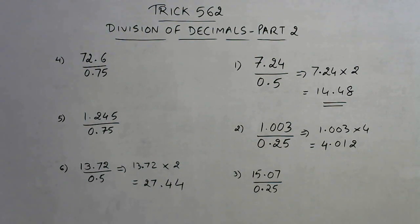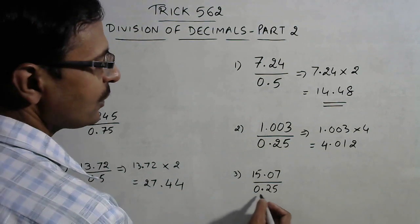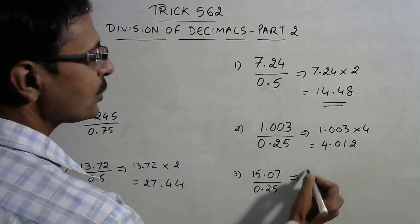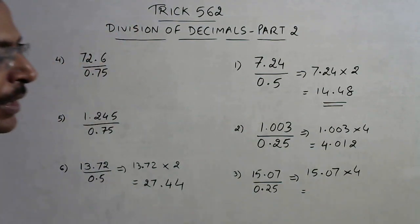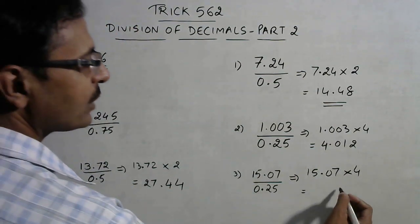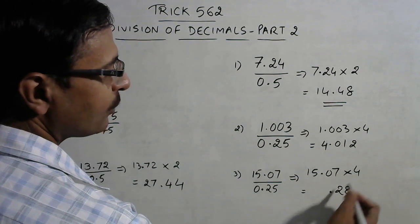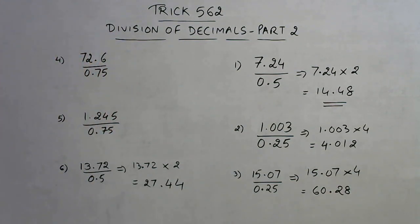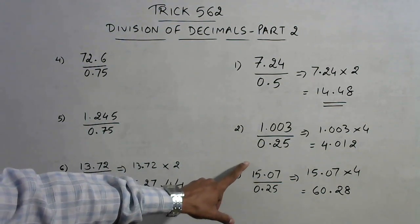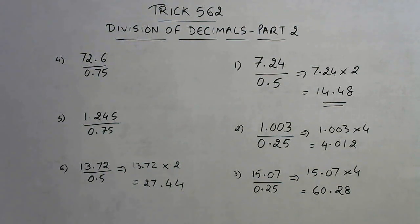So here also you have the denominator 0.25, so your answer will be obtained by multiplying the numerator by 4. Now you can see 7 into 4 is 28 and 4 by 20 and 6, so 60.28 will be the answer when you divide 15.07 by 0.25. Likewise we have two more questions here in which the denominator is 0.75.